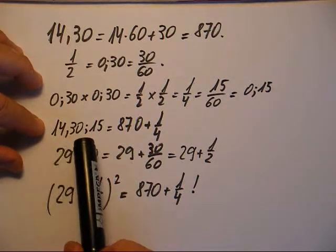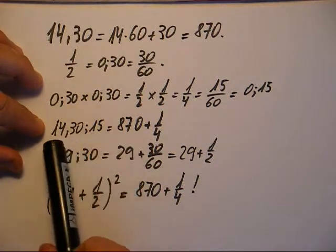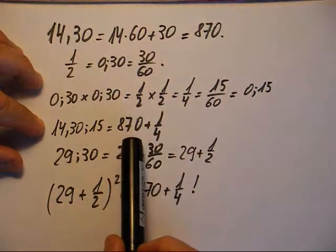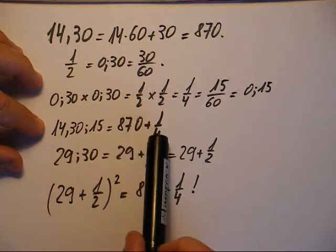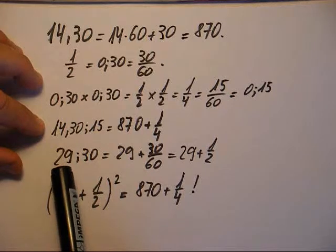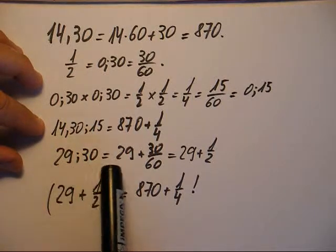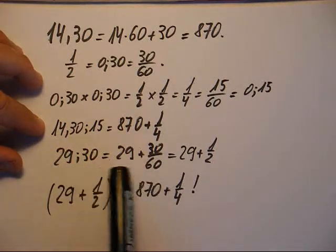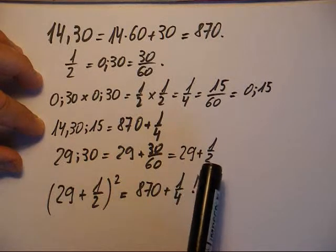Puis 14,30 plus 0,15, c'est le nombre précédent 870 plus 1 quart. Alors le fameux 29,30, 29 plus 30 sur 60, autrement dit 29 plus 1 demi.